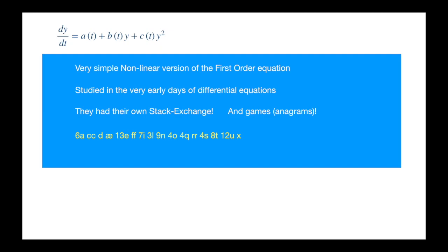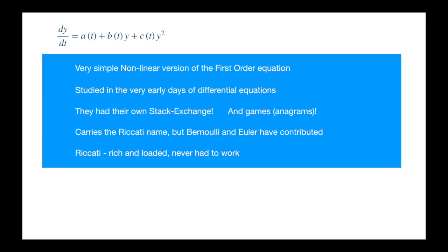The reason we have to mention this is because our history of Riccati also involves these exchanges and anagrams. The equation carries the Riccati name only because he was obsessed with this equation. He was communicating about this equation with all members of the Bernoulli family, and anyone else who would engage. So naturally, people started calling it the Riccati equation. It should have been called hashtag Riccati, but they didn't know the meaning of this symbol back then.